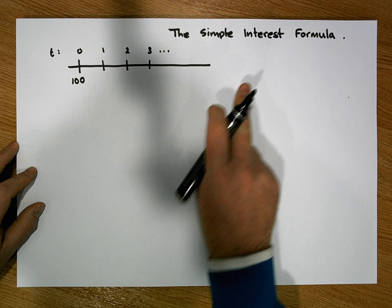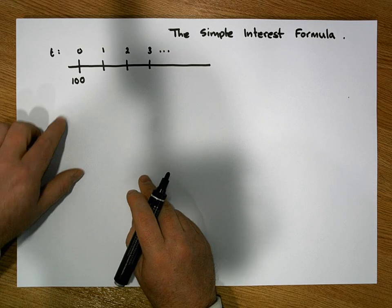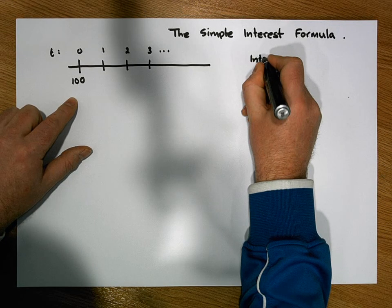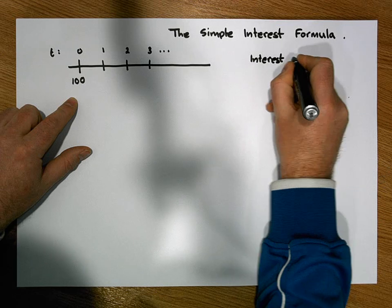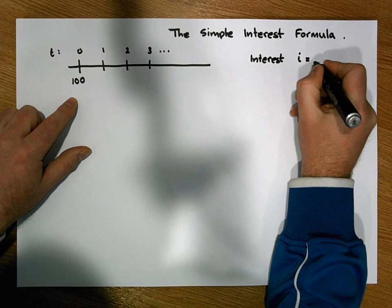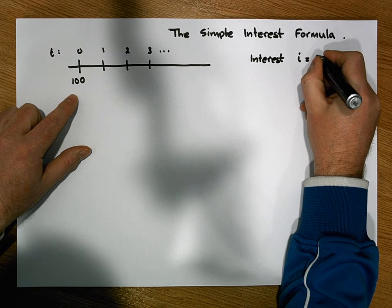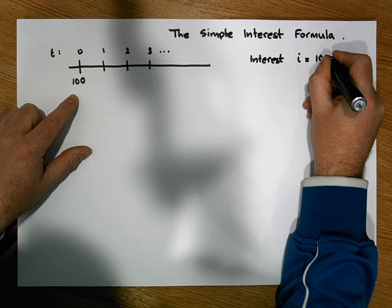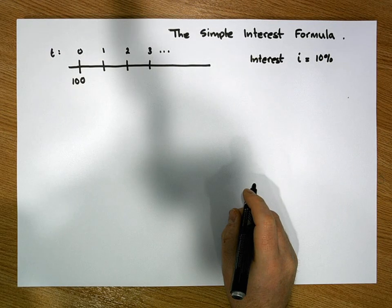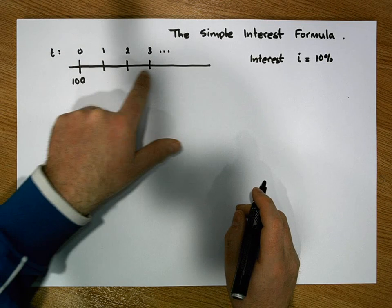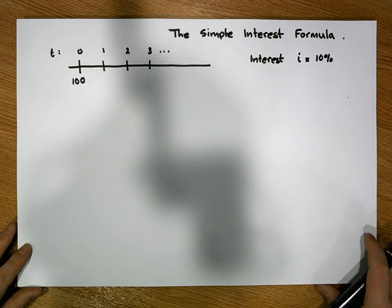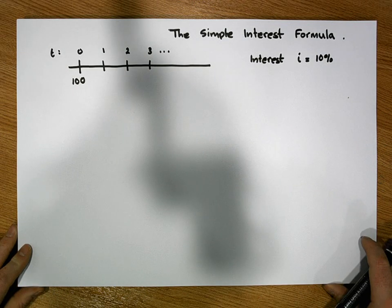Let's assume that this savings account has a fixed interest rate. We'll use the symbol I, and let's assume for this example that the interest rate is 10%.